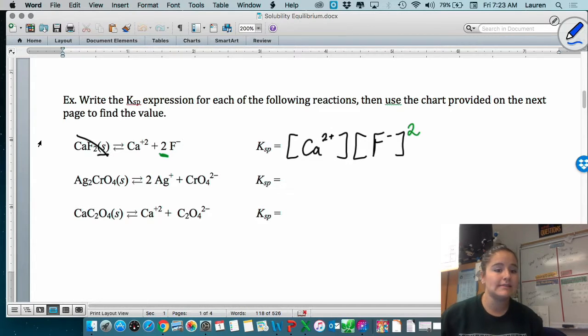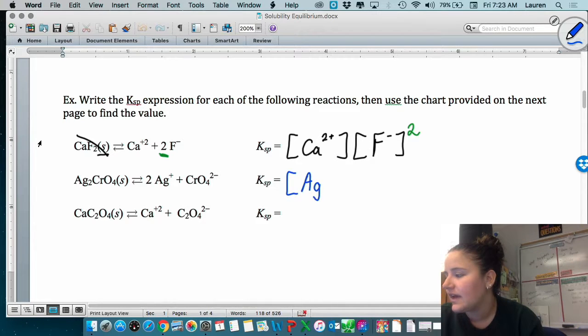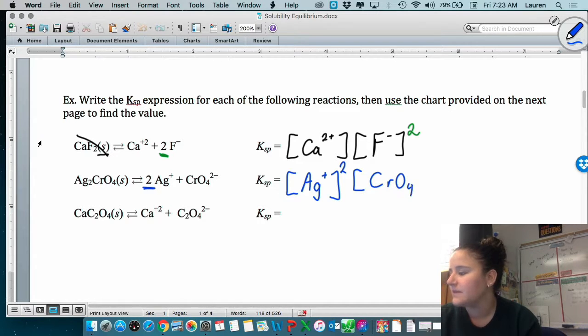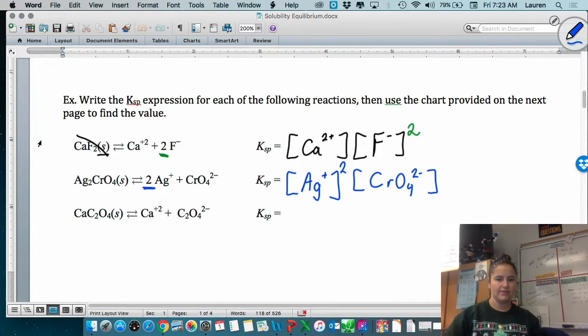For silver chromate, we would have Ag+ squared times the chromate. Polyatomic ions always stay together and they just go inside those square brackets. Go ahead and try the calcium oxalate on your own.